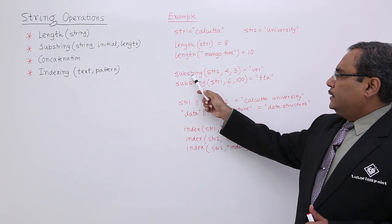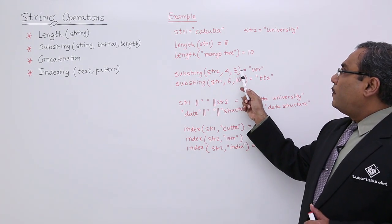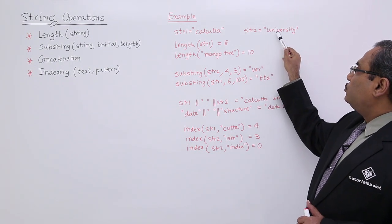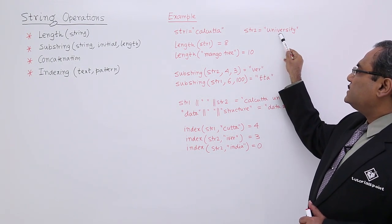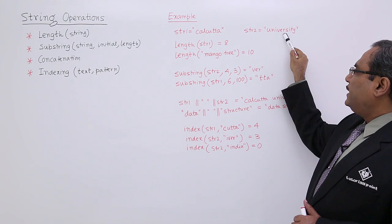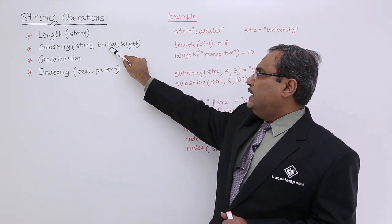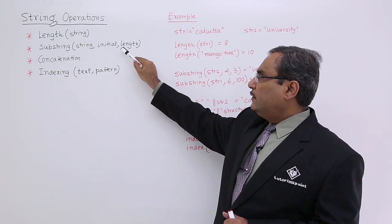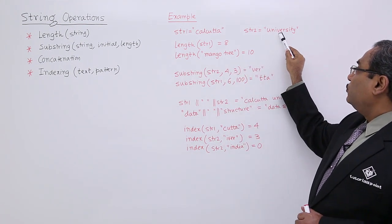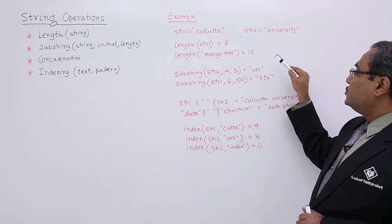Now see, substring STR2 4 comma 3. So 1, 2, 3, 4. From the fourth place, how many characters? Three characters, because it is the initial that is 4, and 3 is the length. So from the fourth place I am having 3 characters. That will be ver.